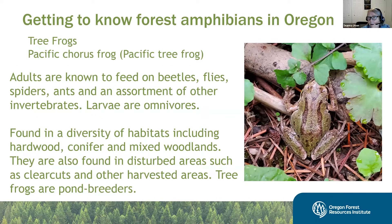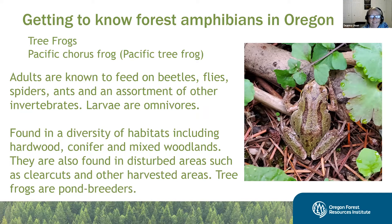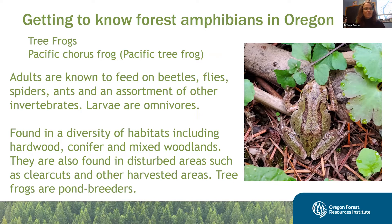Tree frogs, specifically Pacific chorus frogs, are probably the frogs most people know — common pond breeders found everywhere and heard easily. They're the only native frog that vocalizes above water. Color varies from green to brown to green with brown stripes, and there is reportedly a fabled blue morph. Their call allows you to locate the pond and observe a million tadpoles and breeding adults.